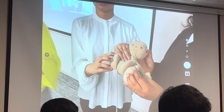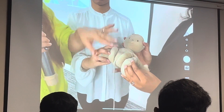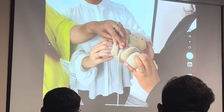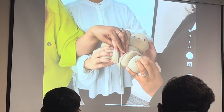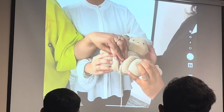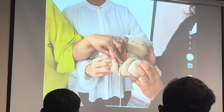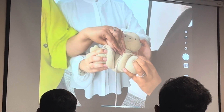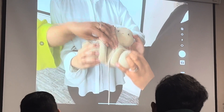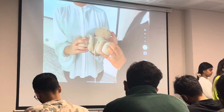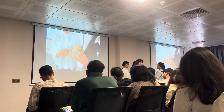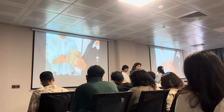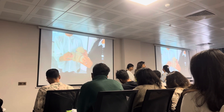Please understand that whenever suprapubic pressure is given, it is given from the pubic symphysis. If you are giving pressure from near the umbilicus, then that is fundal pressure. Fundal pressure is contraindicated. Suprapubic pressure is what you have to give. Is this point clear to all of you?